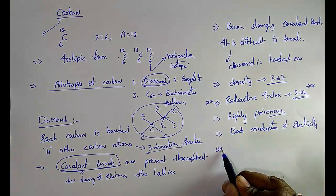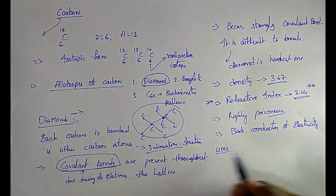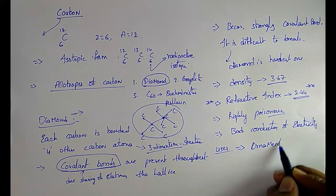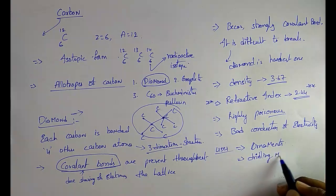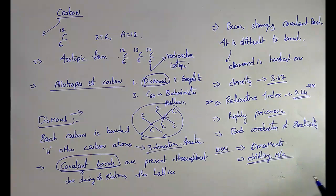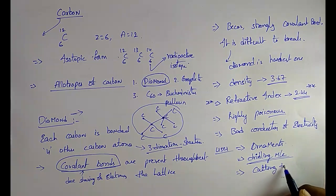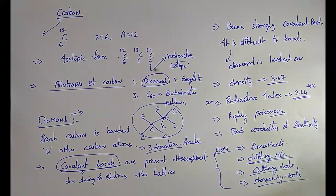The important uses of diamond: since diamond is very, very hard, it is used in drilling machines, cutting tools, and sharpening tools. The most important properties to remember are its density (3.67) and refractive index (2.44), and that each carbon is bonded with 4 other carbon atoms.